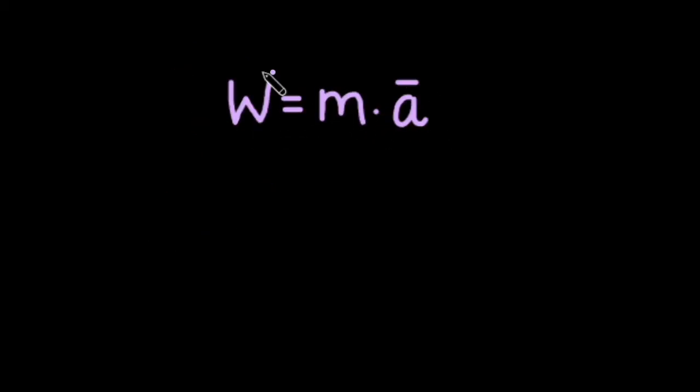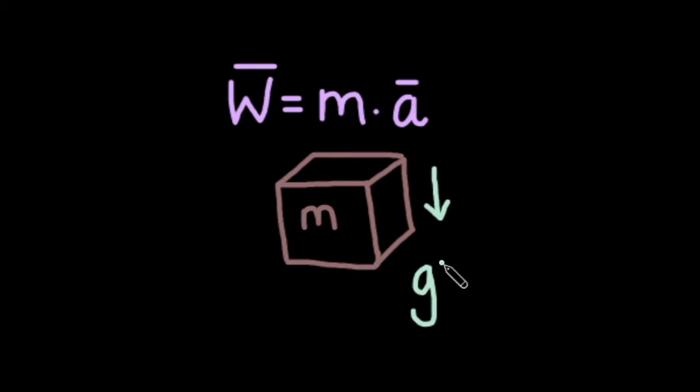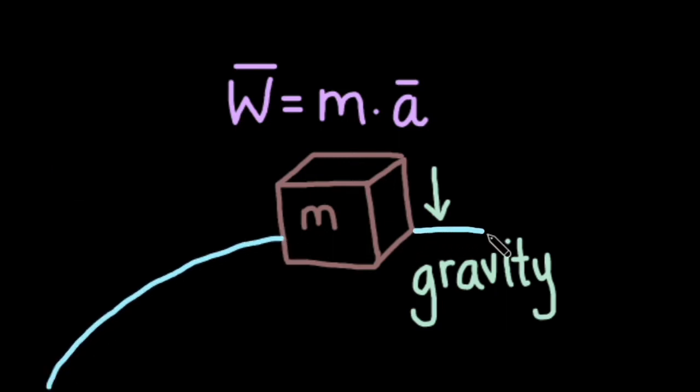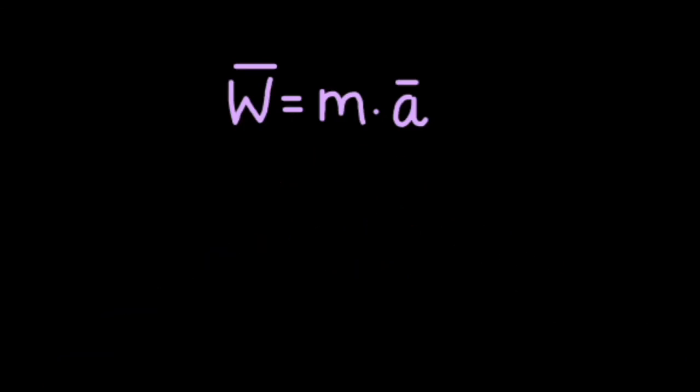We must also consider the weight of objects. Although we often use the terms weight and mass interchangeably, weight is actually a force that is dependent on where you reside. Weight is equal to an object's mass times its acceleration. On Earth, an object's acceleration due to gravity is 9.8 meters per second squared.